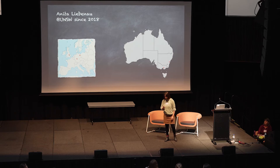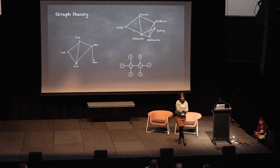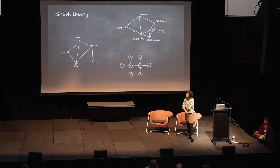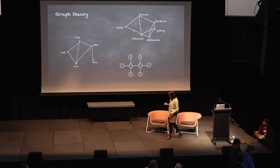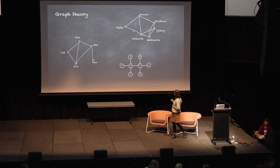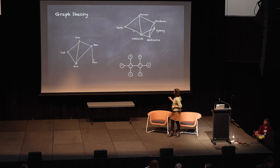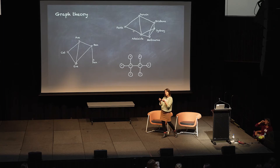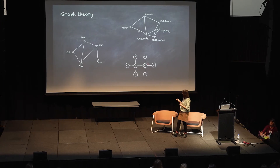I want to tell you about my research area, which is graph theory. So what's graph theory about? It's the study of networks, or the theory of networks. Networks you could think of like road networks — they consist of points with labels. Here the labels are cities of Australia and there is a link between any two cities if there's a road connecting them. Another application is from chemistry where we have carbon atoms and hydrogen atoms linked through molecular bonds to form a molecule.